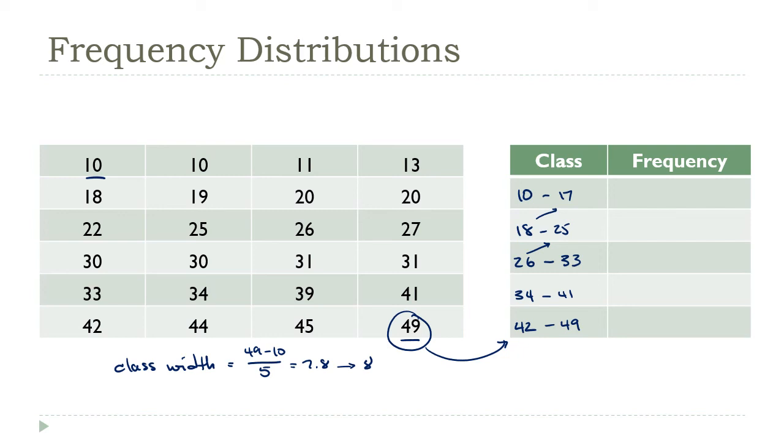So now, I'm just going to go and count the values. I need numbers between 10 and 17. There's 1, 2, 3, 4 of them. 18 and 25. That's 1, 2, 3, 4, 5, 6. 26 and 33. 1, 2, 3, 4, 5, 6, 7.